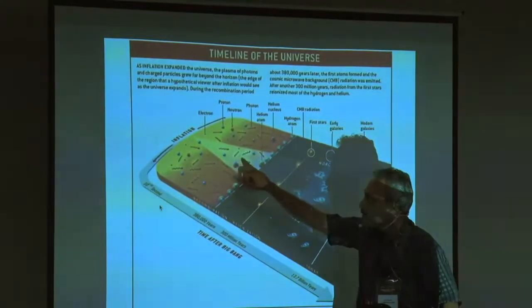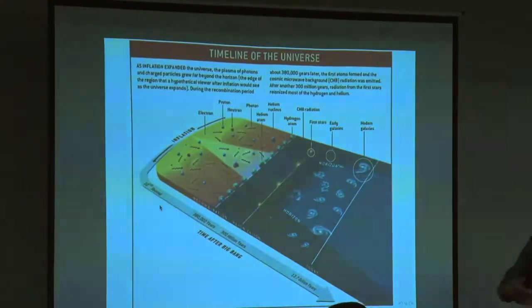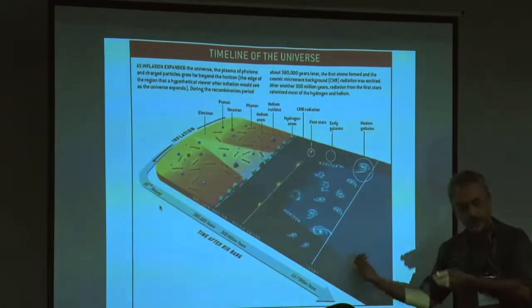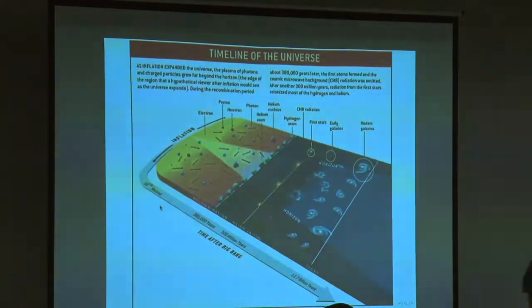That is when atoms could form, hydrogen atoms in particular. This is the point in time when the photons, particles of light and matter, stopped interacting with each other. That is when these photons started flying freely through the universe. Now, some 13 point something billion years have passed since the Big Bang. At this point in time, we see these photons in the microwave region. This light that comes to us is called the Cosmic Microwave Background Radiation. The data is related to this particular phenomenon.